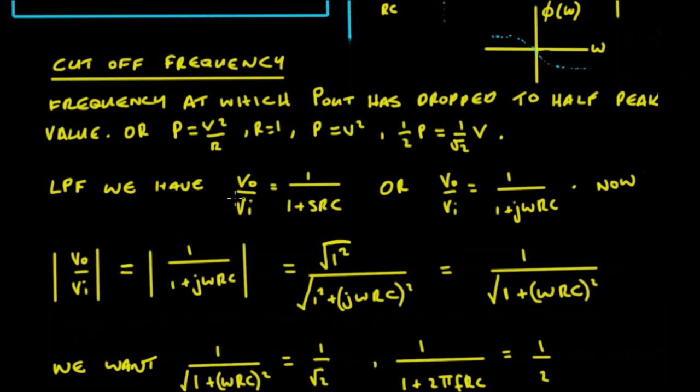So for a low pass filter, we have the transfer function that's given by this equation. Or we can write it in terms of the frequency by replacing S by j omega. So if we were to look at the magnitude of that transfer function, it's equivalent to squaring all the terms and taking the square root of the whole thing. So that's equivalent to root of 1 squared and the root of that 1 squared and the j omega R C squared.